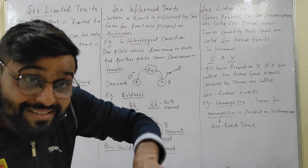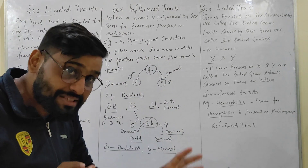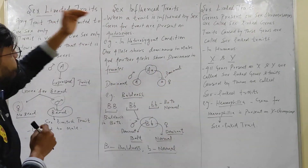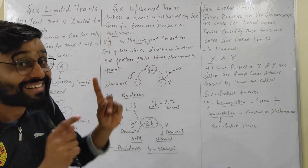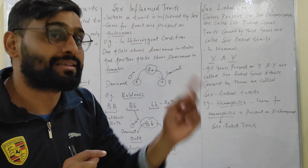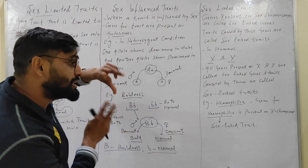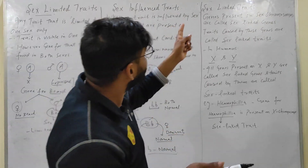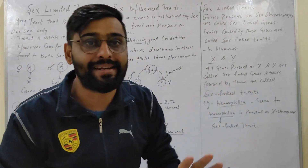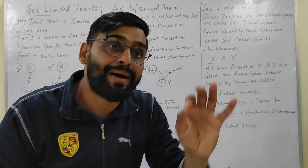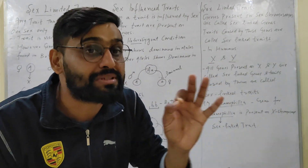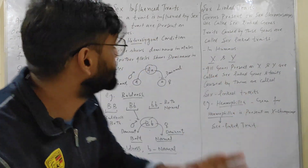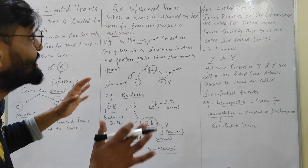Sex-limited trait: the trait is limited to only one sex; however, the gene is present in both sexes but expressed in only one. In the case of sex-influenced trait: the trait is influenced by sex and behaves differently in different sexes. Sex-linked trait: any trait caused by a sex-linked gene — a gene present on a sex chromosome — is called a sex-linked trait. This is the difference between these three terms.